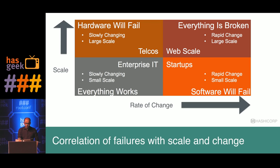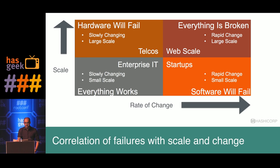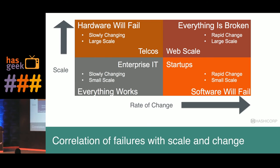I want to talk about the correlation of failures with scale and how it correlates with change. The nature of an organization — type of business, culture, etc. — influences what kind of failures we can expect. Scale and rate of change are the two primary reasons that dictate failures. By change, I mean changes in software, configuration, new features rolling out to users. Scale means the number of users and the size of compute infrastructure.